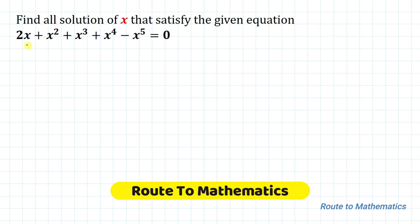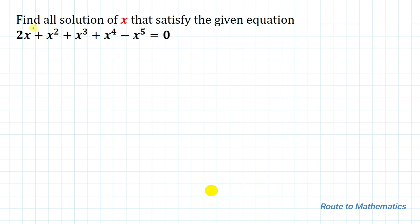Hello everyone, welcome to Root 2 Mathematics. In this video we are going to solve for x. The given question is: find all the solutions of x that satisfy the equation 2x plus x squared plus x cubed plus x to the power 4 minus x to the power 5 equals 0. We have an equation with highest degree 5 and we are asked to find all solutions of x.